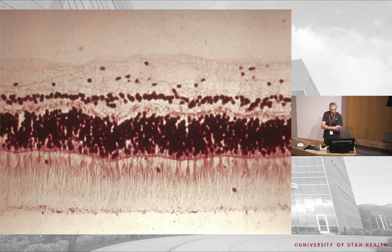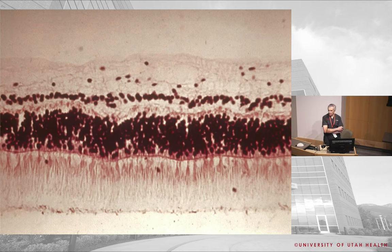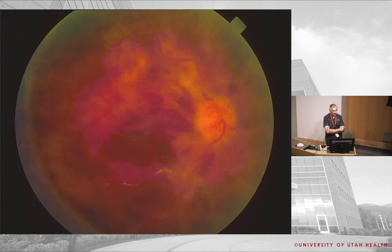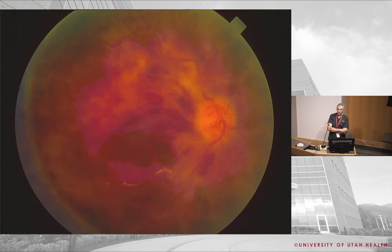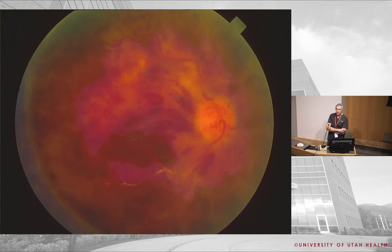There's some discussion about the exact watershed layer — roughly the outer third of the inner nuclear layer is supplied by the choroid and the inner two-thirds by the central retinal artery. Now this image is a 'blood and thunder' central retinal vein occlusion — all four quadrants affected, venules markedly dilated, blood everywhere. Central retinal vein occlusion is thrombotic, not embolic, caused by arteriosclerosis producing stasis in the vein.